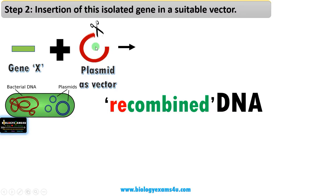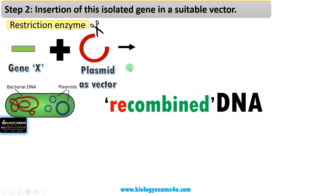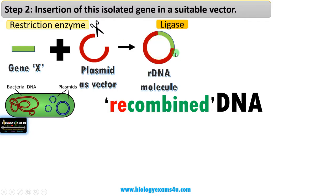First we make a cut using a restriction enzyme, often called molecular scissors. Then we insert our gene X into this plasmid, forming a recombinant DNA molecule.